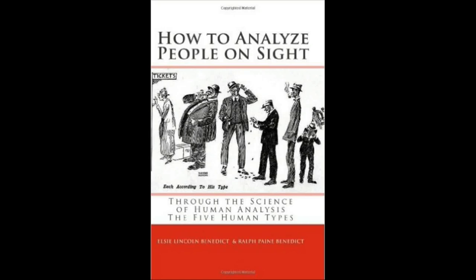Postpone combinations: Until you have learned these pure types thoroughly, it will be to your advantage to forget that there is such a thing as combinations. After you have these extreme types well in mind, you will be ready to analyse combinations. The five types: Science has discovered that there are five types of human beings. Discarding for a moment their technical names, they may be called the fat people, the florid people, the muscular people, the bony people and the mental people. Each varies from the others in shape, size and structure and is recognisable at a glance by his physique or build.